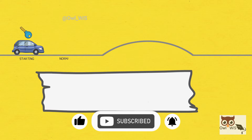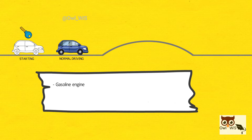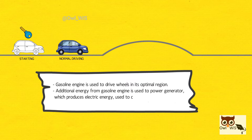Normal operation. Driving at constant speed, the gasoline engine is used to drive the wheels in its optimal region. Additional energy from the gasoline engine is used to power the generator, which produces electric energy used to charge the battery for later use.